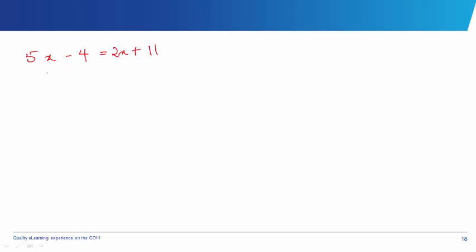Now let's get into the main problems in equations. The first question goes: 5x minus 4 equals 2x plus 11. Whenever you see a question like this, observe carefully — you have a number with x on one side and a similar term on the other side, and whole numbers on both sides. The first thing you do is bring like terms together.